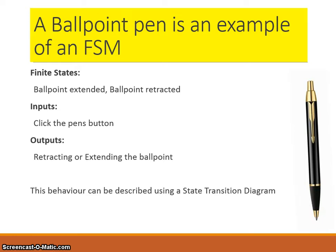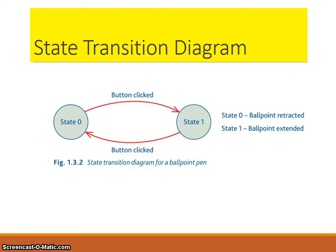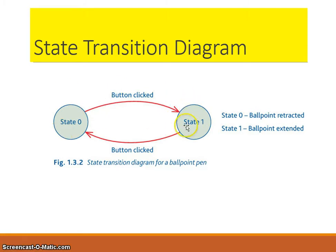These can be represented on something called an STD — a state transition diagram. Here is a state transition diagram for the ballpoint pen. There is state 0, which represents the ballpoint retracted, and state 1, the ballpoint extended. The arrows represent the transitions between the states and on the arrow is the input. The button is clicked and it moves from state 0 to state 1; the same input moves it back again.